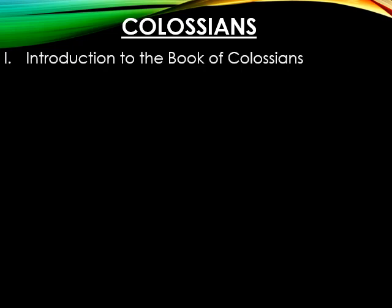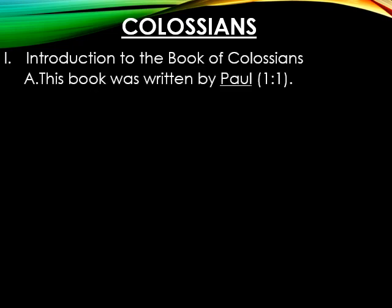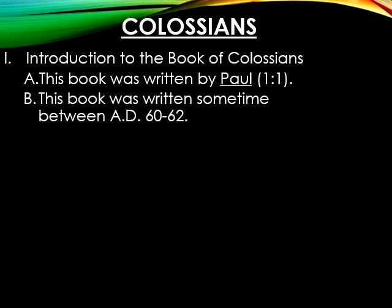For the introductory section, letter A: this book was written by Paul, as directly declared in Colossians 1 verse 1. Letter B: it was written sometime between AD 60 and 62. This book, along with many others we've already discussed, was written during Paul's first Roman imprisonment — along with Ephesians, Philippians, and Philemon. Those four are the prison epistles.